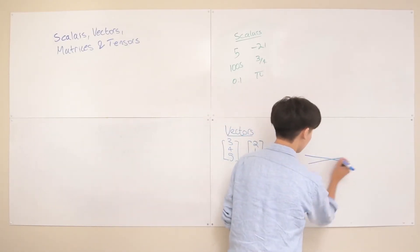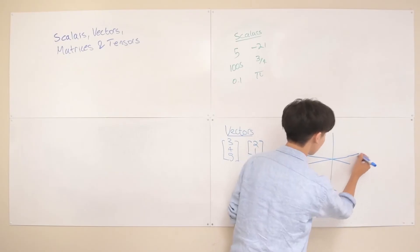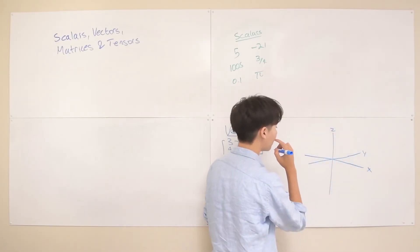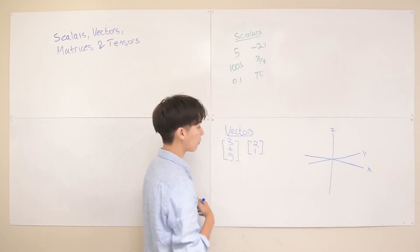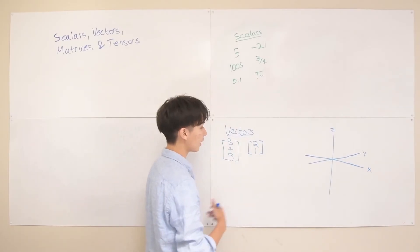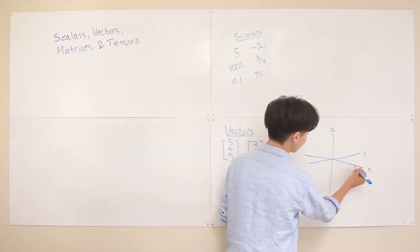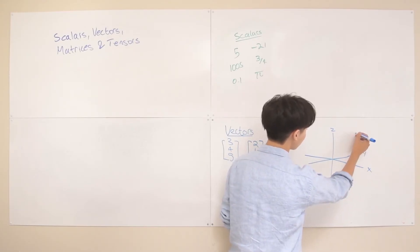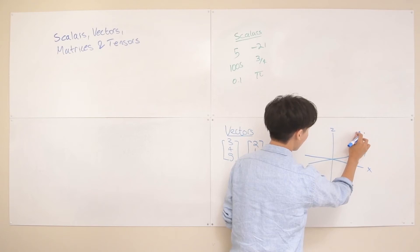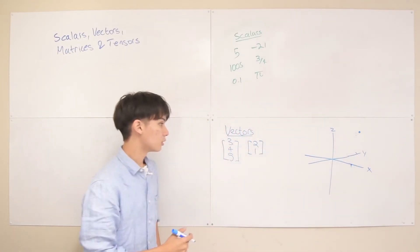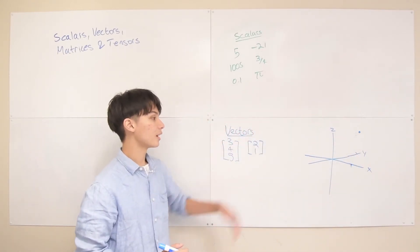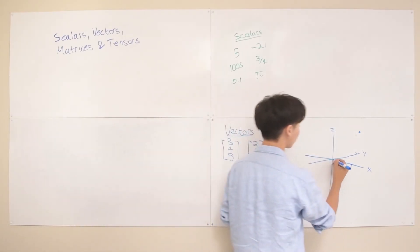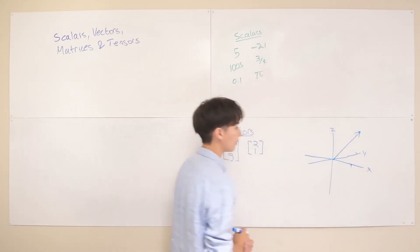That vector [3, 4, 5] is equivalent to that point at x equals 3, y equals 4, and z equals 5, and again you can use an arrow from the origin to represent that.